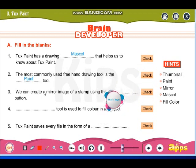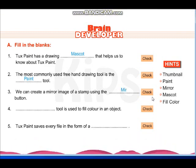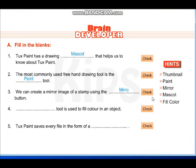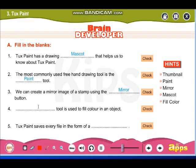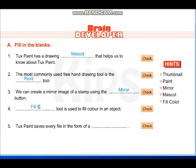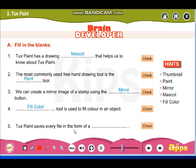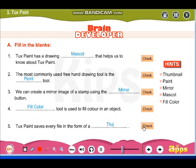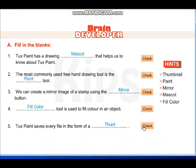We can create a mirror image of the stamp using the mirror button. The fill color tool is used to fill color in an object. Tux Paint saves every file in the form of a thumbnail — meaning you cannot give a name to your file.